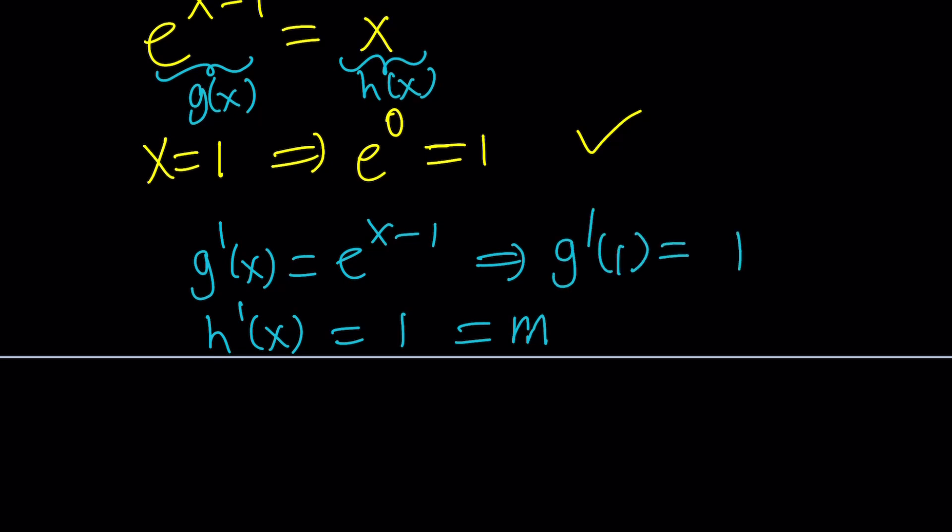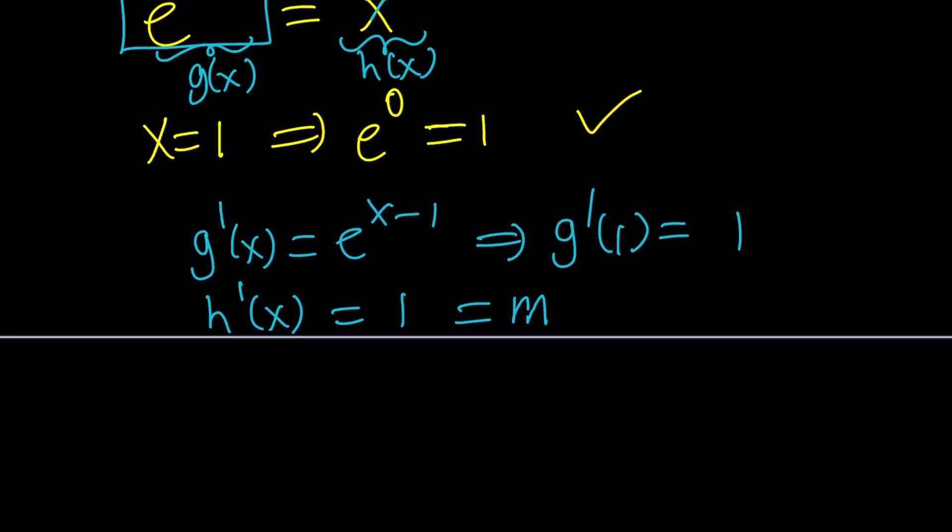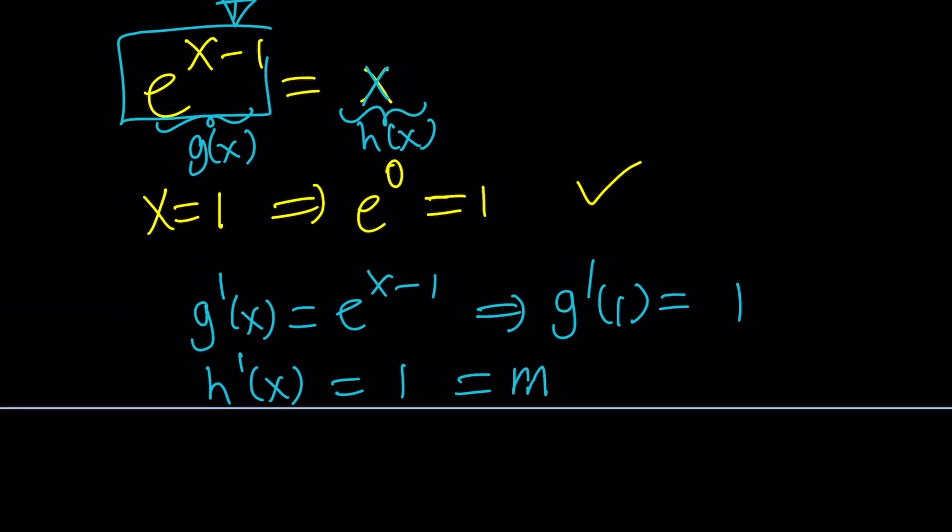What that means is that the derivative at 1 is 1, which means the slope of the tangent line given to this function, the slope of the line that is tangent to this function at x equals 1, equals 1. But that line is y equals x. Why? Because it has the same slope. How do we know it's that line? Maybe it's x plus 1, but they also intersect. So they intersect and the slope of the line is the same slope as the slope of the tangent line.